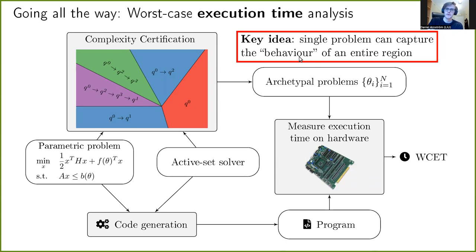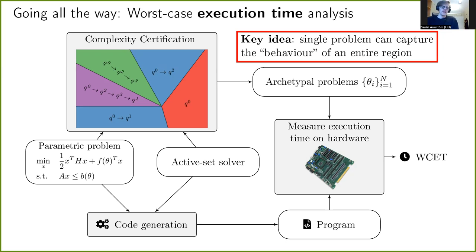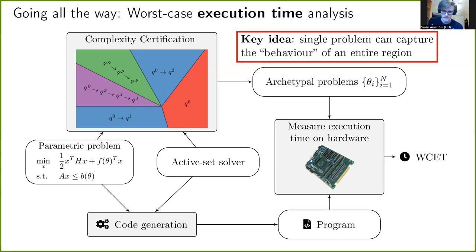The key idea is that a single problem can capture the behavior of an entire region, so we only need to pick one sample per region from the complexity certification partitioning. This is very neat — we get exact worst-case execution time. Of course, when deploying this you do need to think about cache effects and other timing-invariant hardware phenomena, but those are details I won't expand upon here — happy to discuss afterwards.